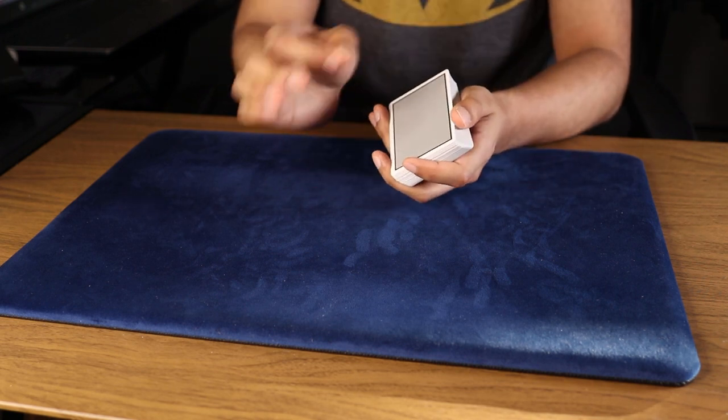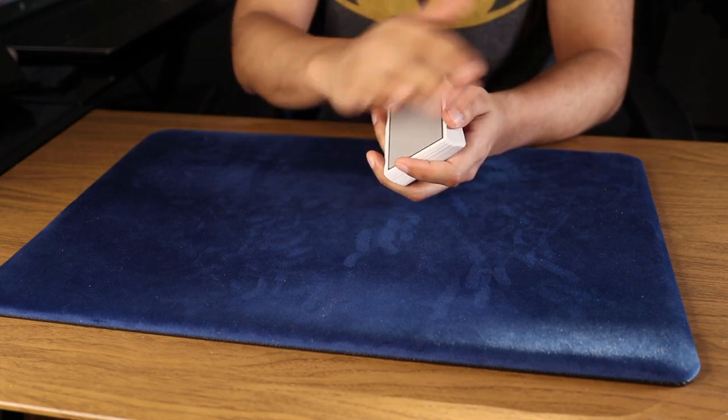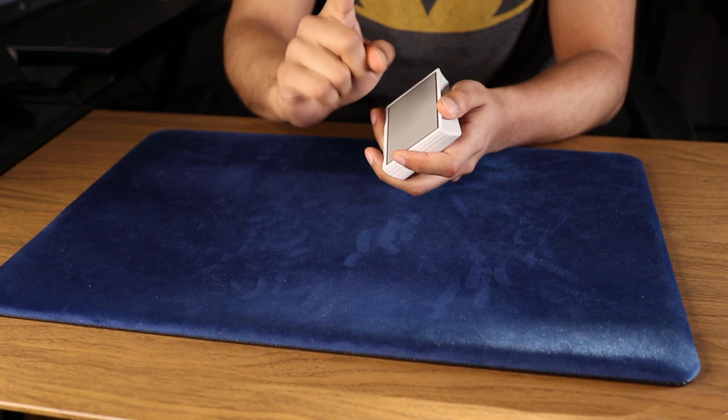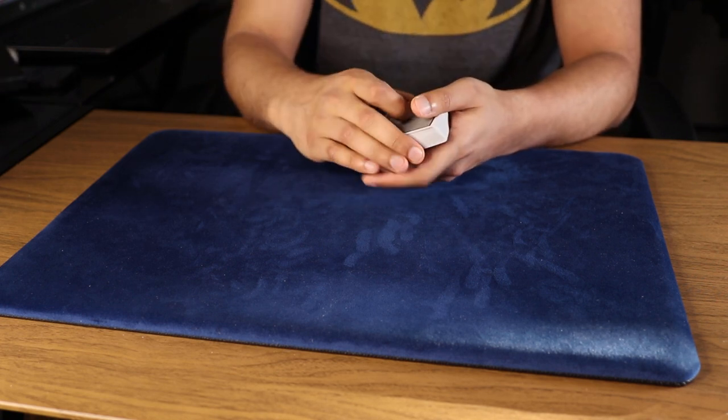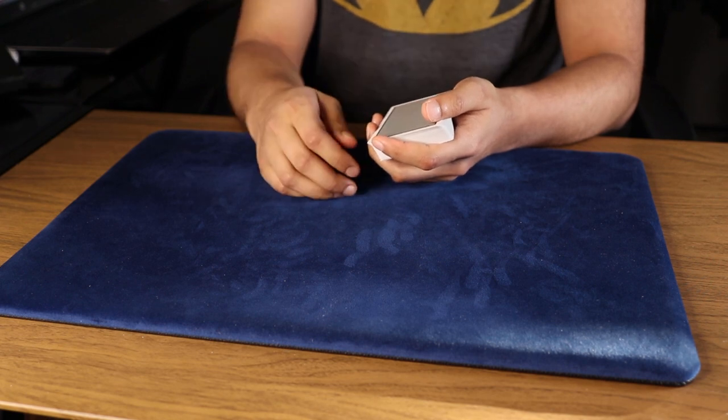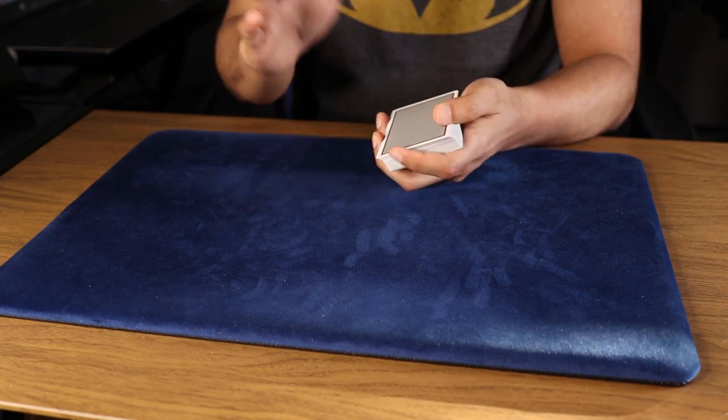Now at this point, I want the spectator to think of any number. So tell me a number between one and 52. We're actually gonna use that number to find the card, your card, your selected card later on. So let's just say we said the number, I don't know, 10, just to make life a little easy.